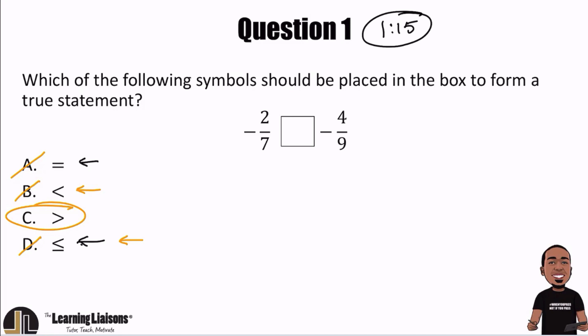Let's grab our calculators to prove it. Negative two over seven is negative 0.28, and negative four over nine is negative 0.44. Which one's greater — owing 28 cents or owing 44 cents? Only owing 28 cents is better than owing 44 cents, confirming the answer. You actually don't even need to look at the question itself. That little tip and trick is going to save you at least four minutes on exam day, because you'll see at least one or two of those problems.